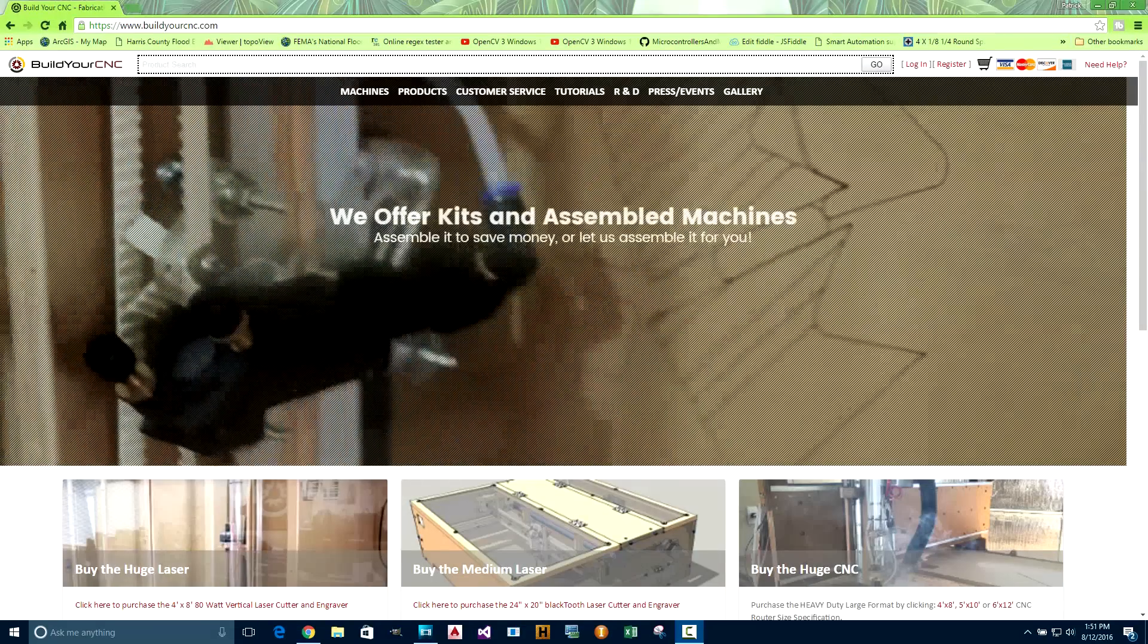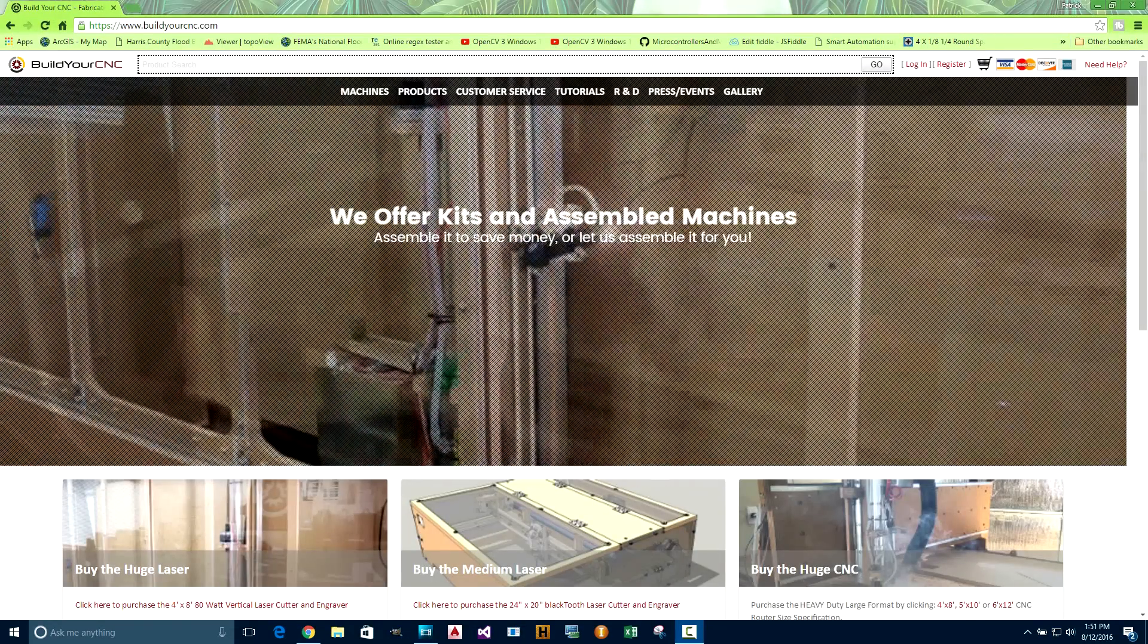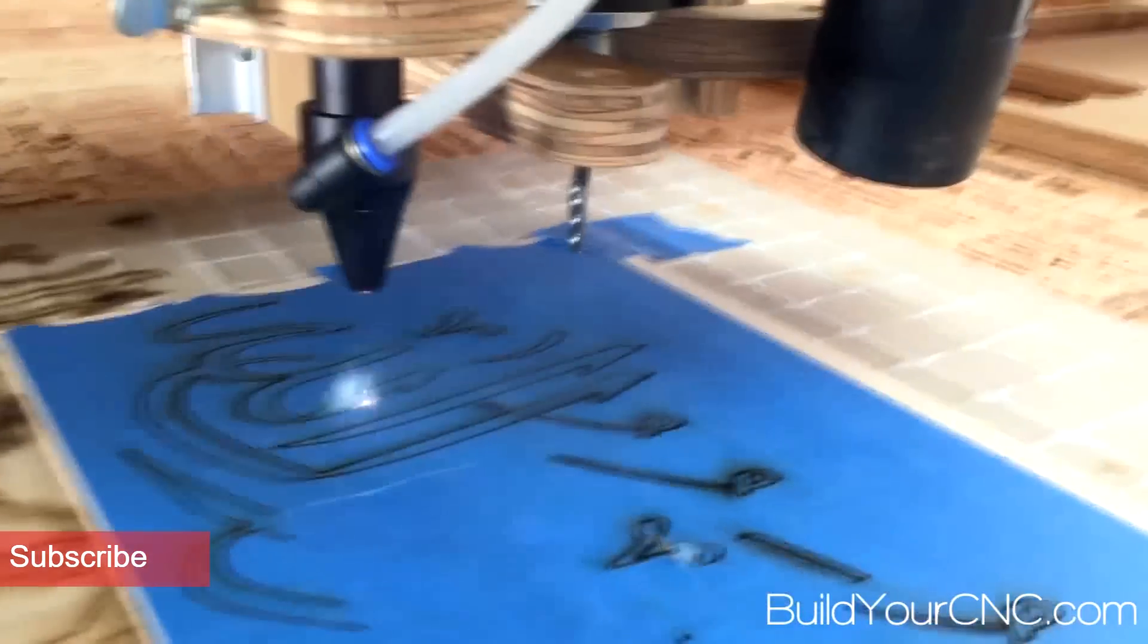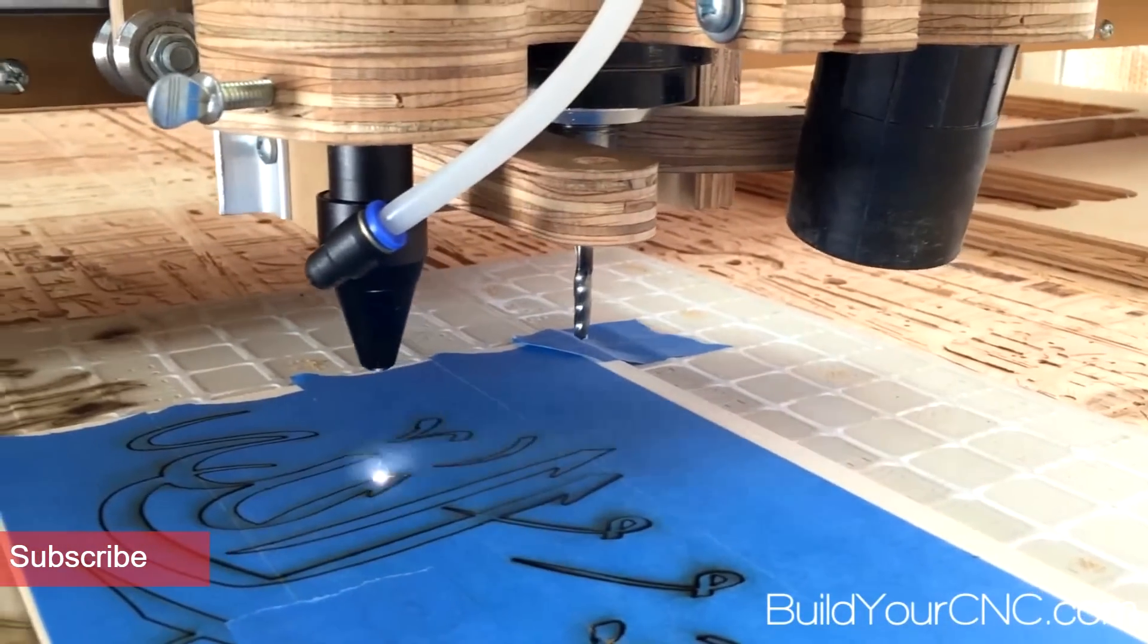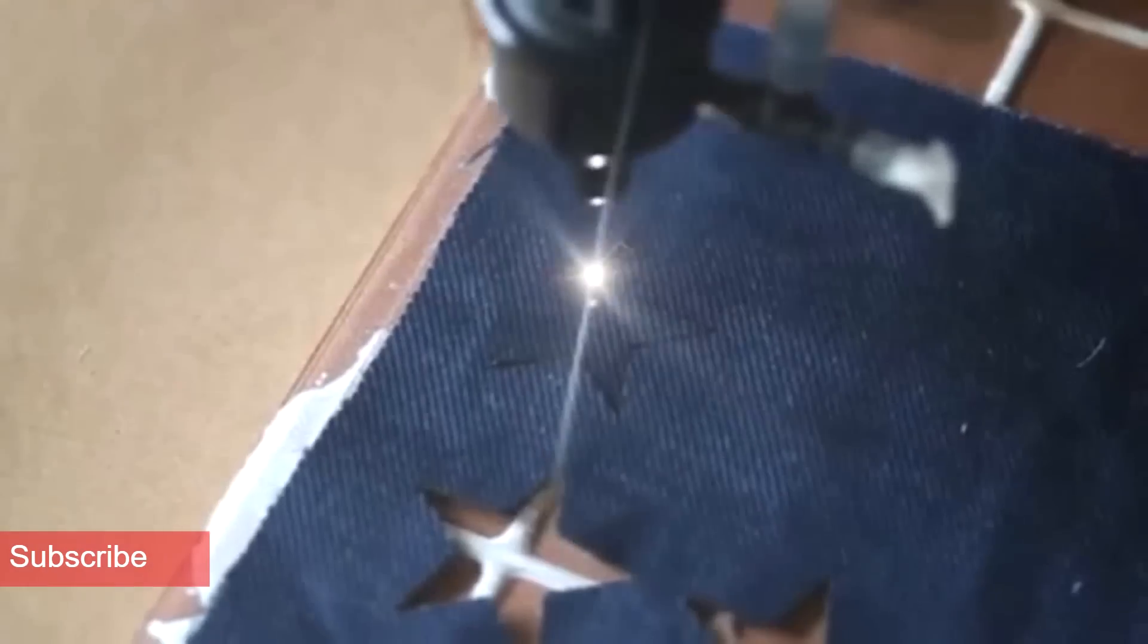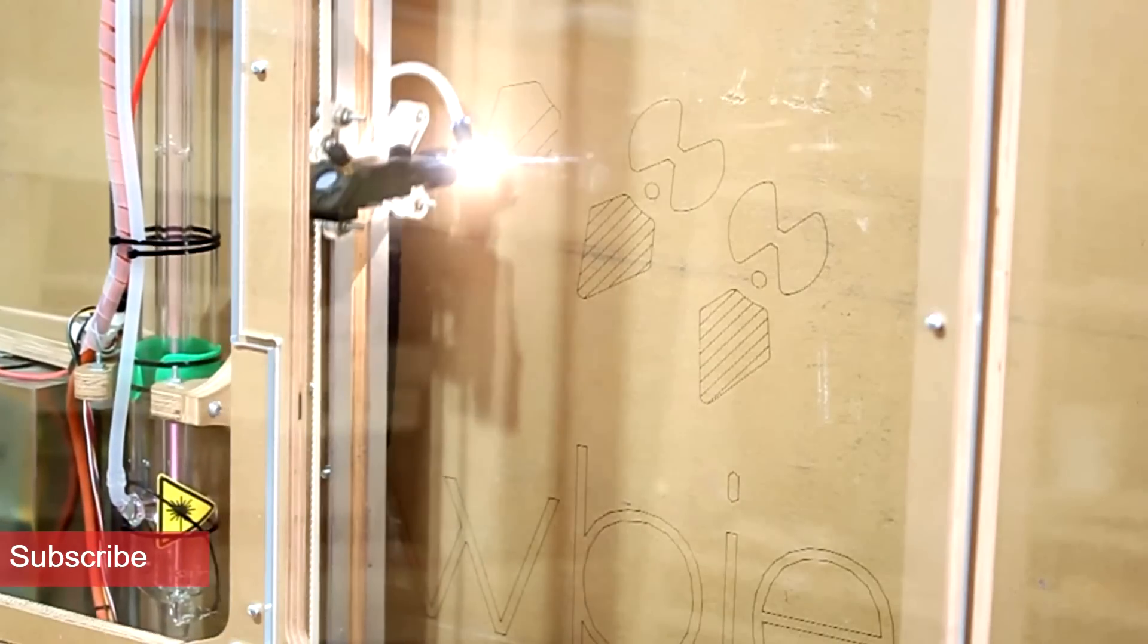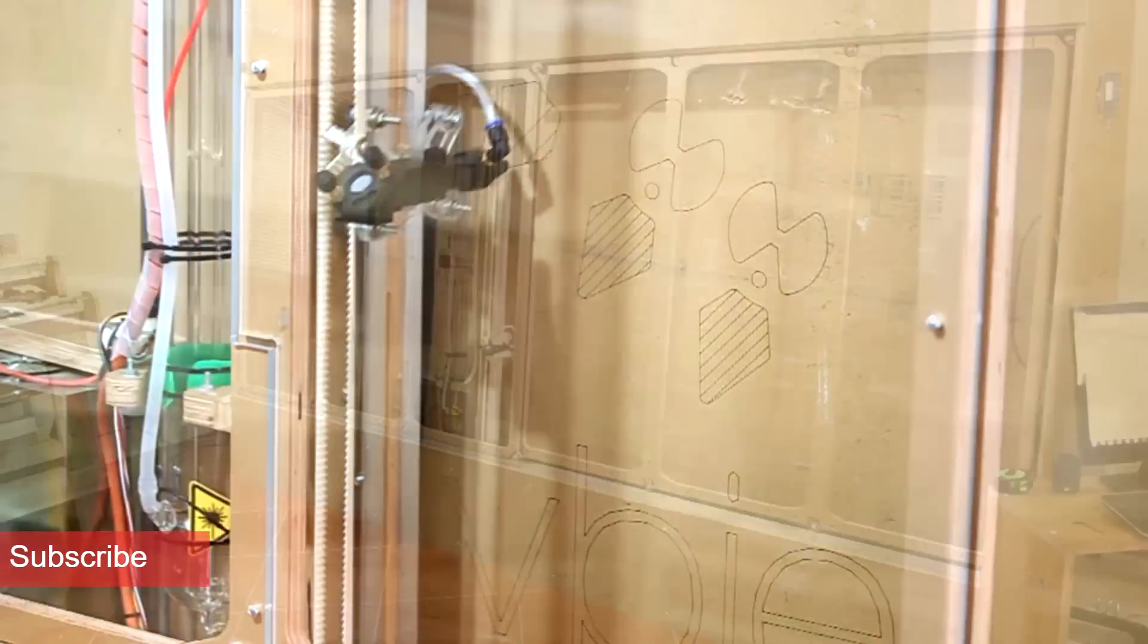Go to BuildYourCNC.com where you'll find CNC machines and routers ranging from 1 foot by 3 foot small format machines to huge 6 foot by 12 foot large format machines. Check out our laser cutters and engravers with sizes ranging from 20 inches by 24 inches up to 4 feet by 8 feet large format.